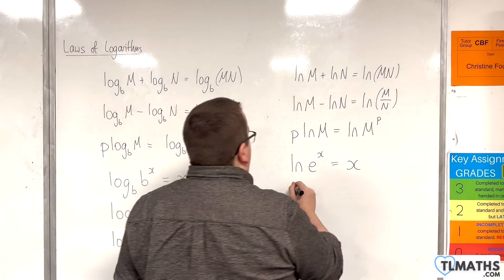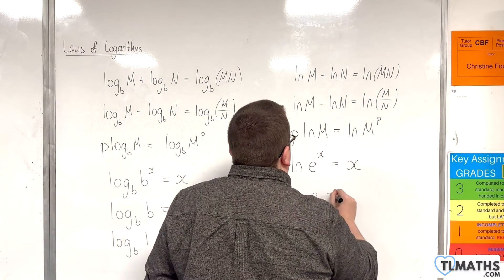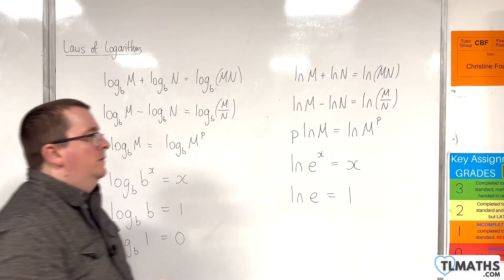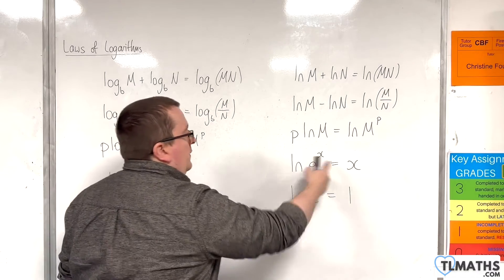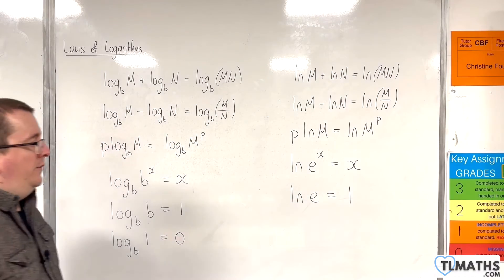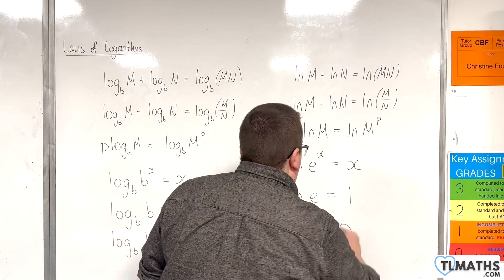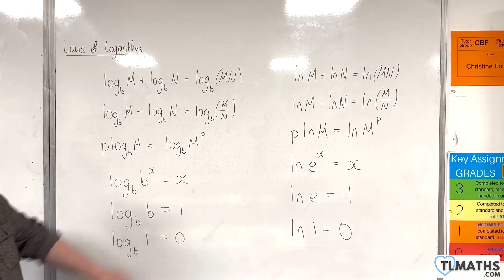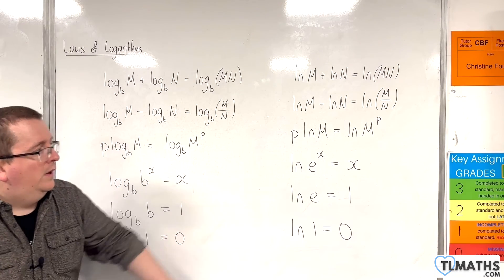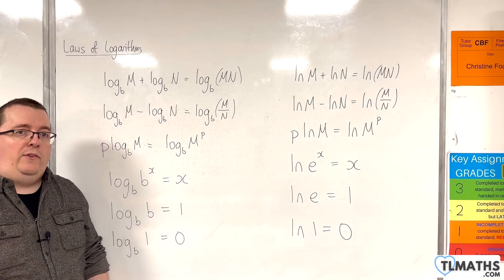So the natural log of e will be equal to 1, where of course x is 1 in this case. And when x is 0, we'll have the natural log of 1 must be 0. So this is how the laws of logarithms appear in terms of log base e.